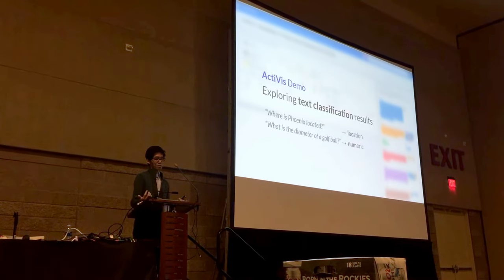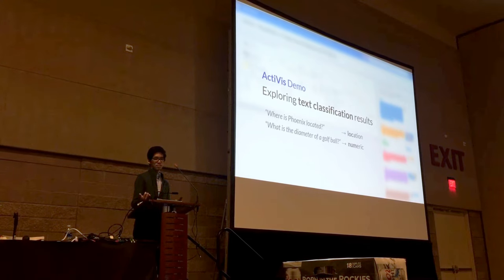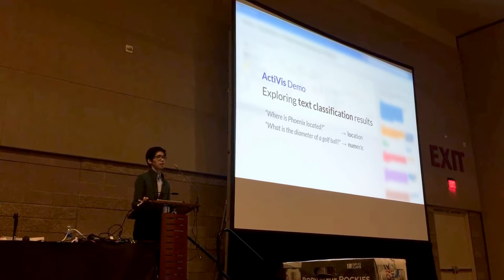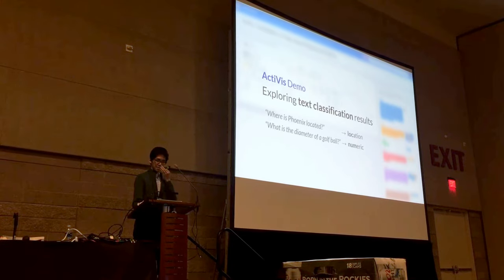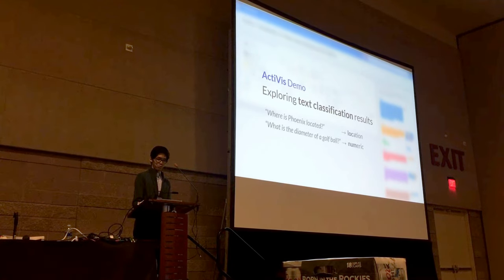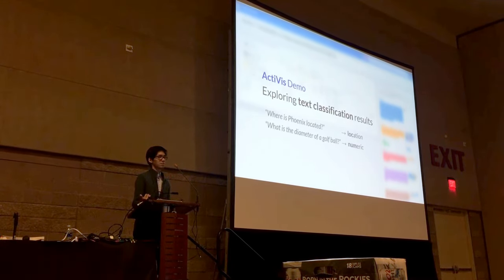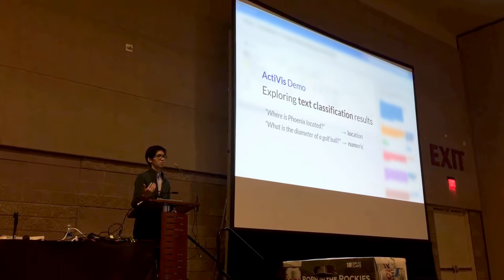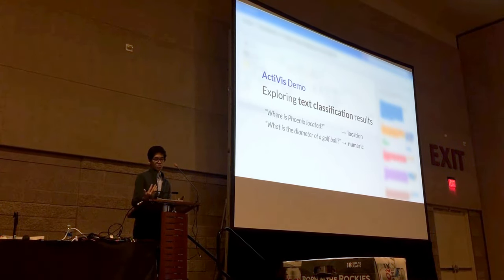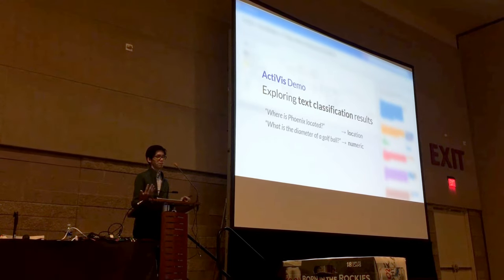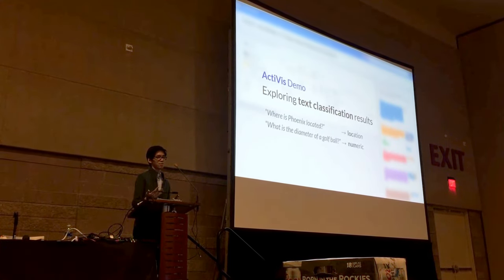I'd like to show you a demo of our tool. I'll be using a text classification example with a public dataset. This dataset classifies a question sentence into one of six classes, such as number, location, and abbreviation. For example, given the sentence 'Where is Phoenix located?', it should be classified as the location class.